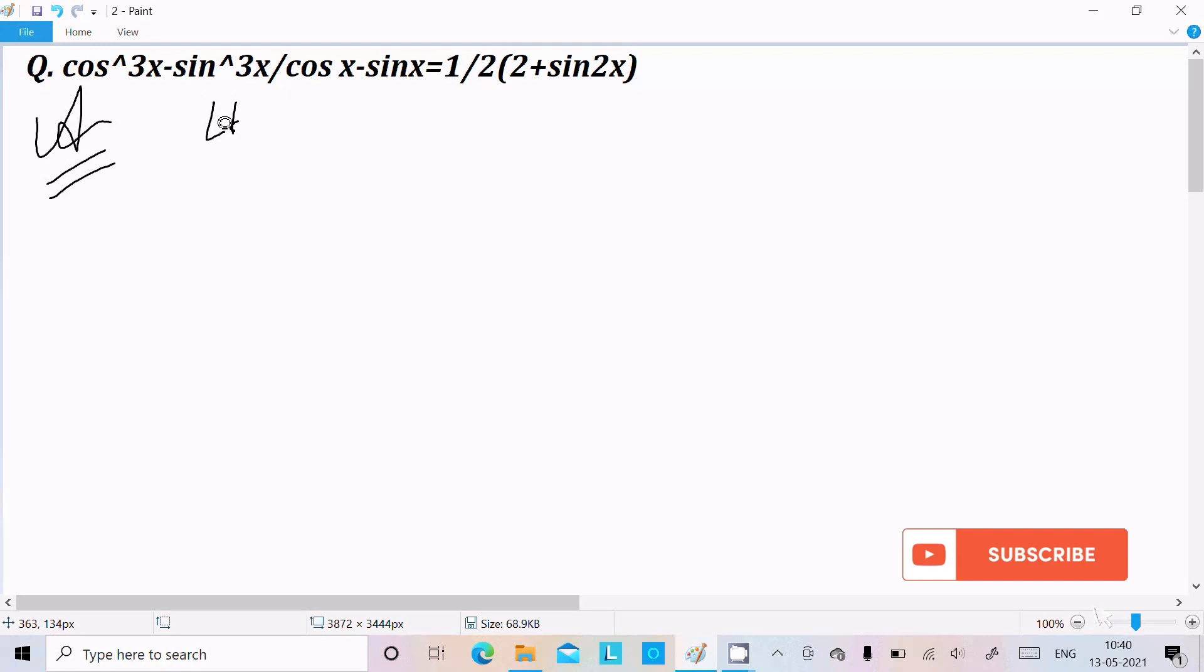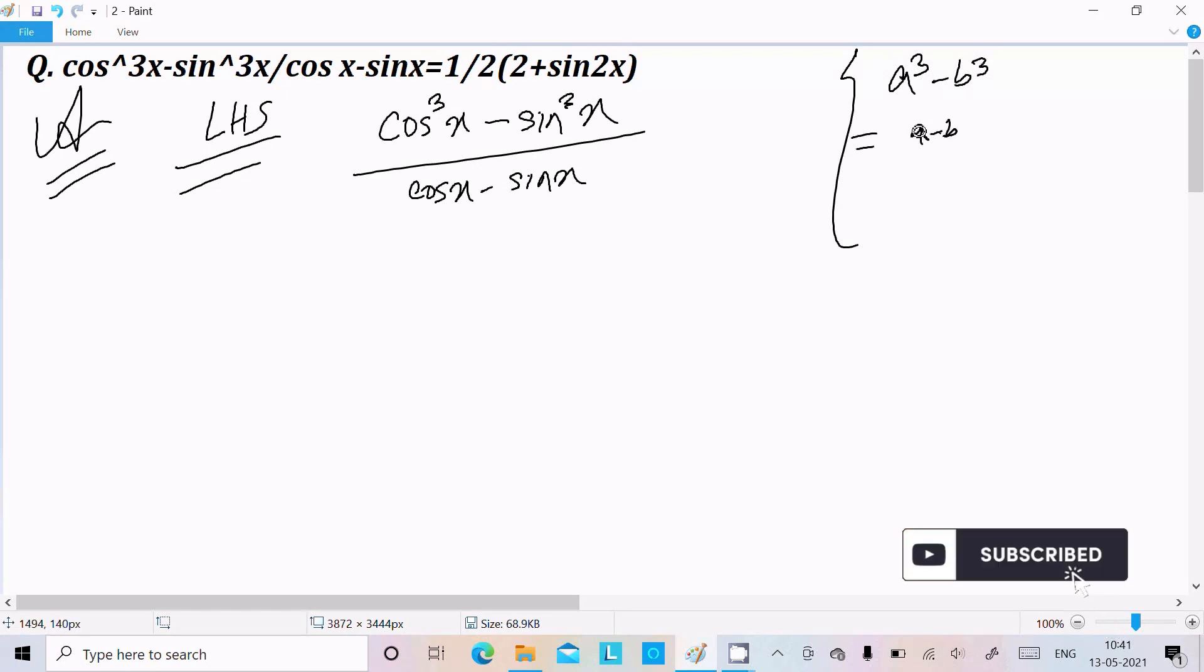Here I am going to take the LHS part, that stands for left hand side. So on the left hand side, cos³x minus sin³x divided by cosx minus sinx. This problem is based on a³ minus b³ formula. So a³ minus b³, the formula is (a minus b)(a² plus b² plus ab).